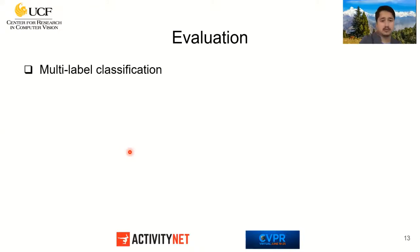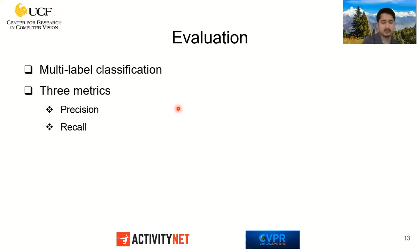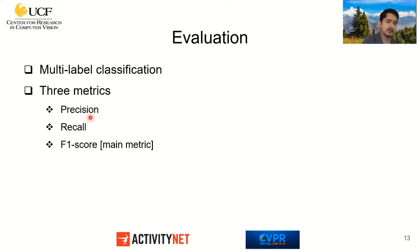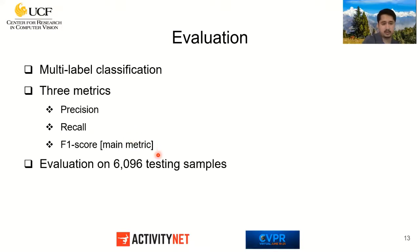Since this is a multi-label classification problem, we use three metrics: precision, recall, and F1 score — which is the main metric for ranking participants. All three metrics are computed class-wise, and evaluation is done on around 6,000 testing samples.